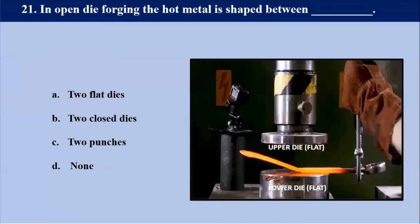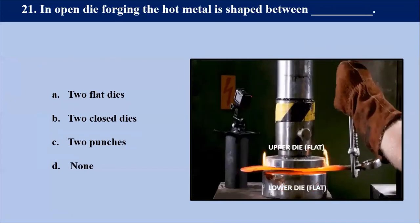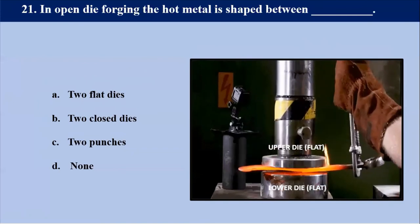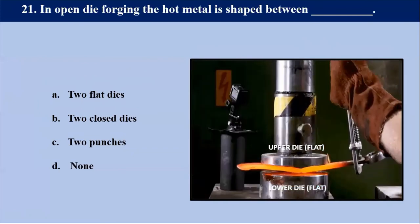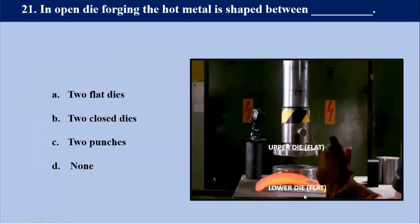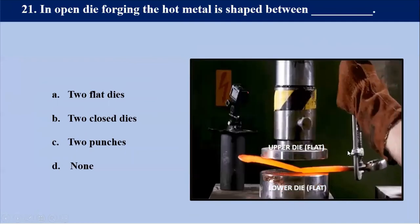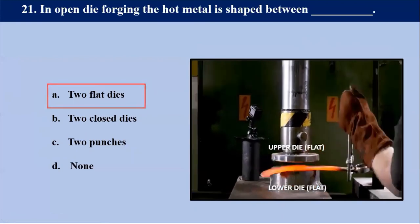In open die forging, the hot metal is shaped between? Open die forging is a hot forming process in which metal is shaped by a hammer or pressing between two flat dies, as seen in this diagram. That's why our answer is two flat dies.